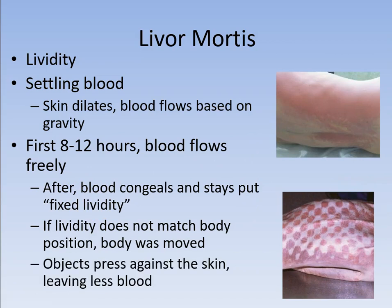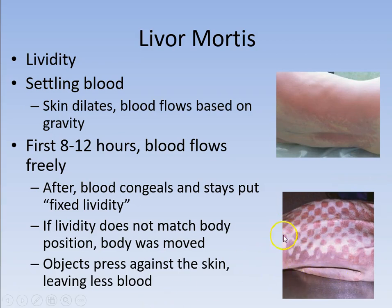Also, if you are laying on something as the blood begins to settle, the pressure of those objects can actually move the blood in different patterns. This is an actual lividity pattern found on someone — what could cause those little checkerboard-type marks? This person expired while sitting in a lawn chair, and you can see that the straps of the lawn chair actually pushed the blood into the spaces where the straps were not. So we can tell this person died and was in that chair long enough for lividity to become fixed.